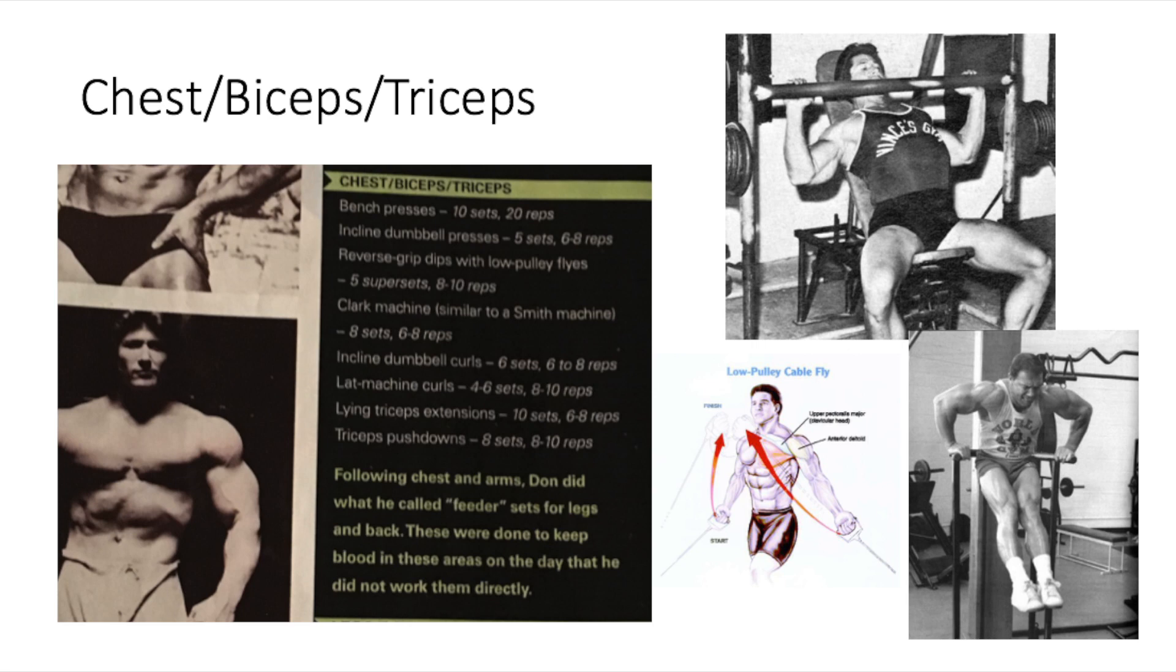Then moves on to the lap machine curls, which I believe is the same thing as cable curls, does four to six sets of eight to ten repetitions. Then moves on to the lying tricep extension, which is the same thing as skull crushers, does 10 sets of six to eight reps, then finishes off with tricep press downs, does eight sets of eight to ten reps.